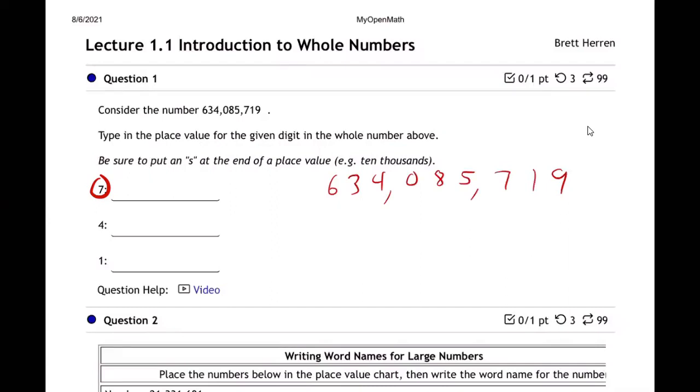Remember, the first spot is called the ones place, and then the next one is called the tens. You probably remember all this. And then the hundreds. Ones, tens, hundreds, right? And then thousands.